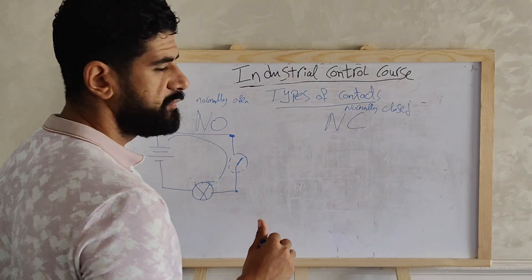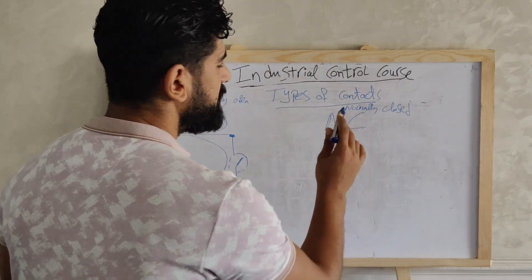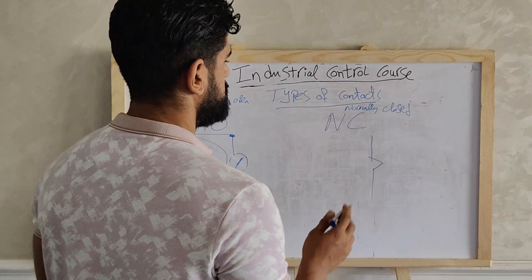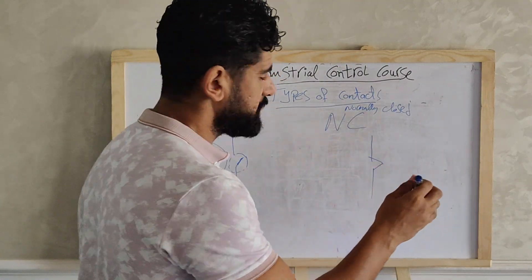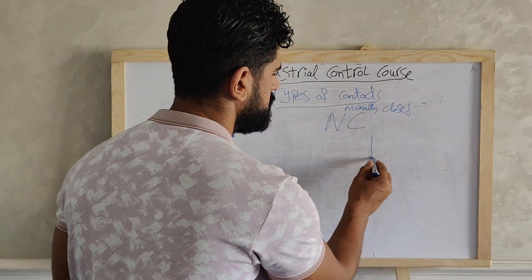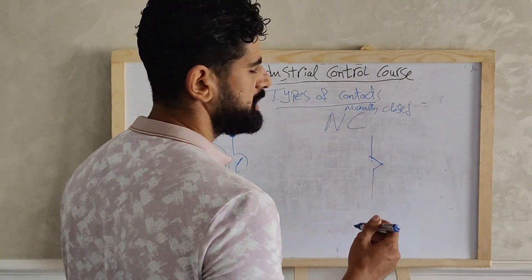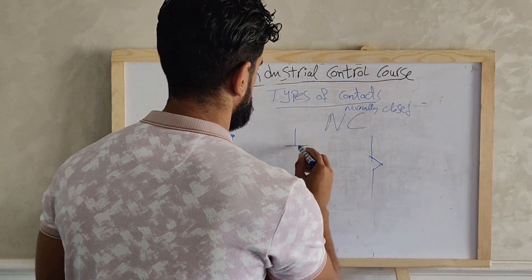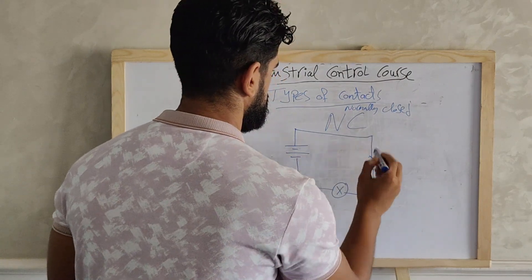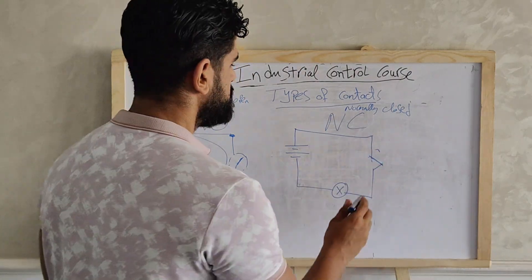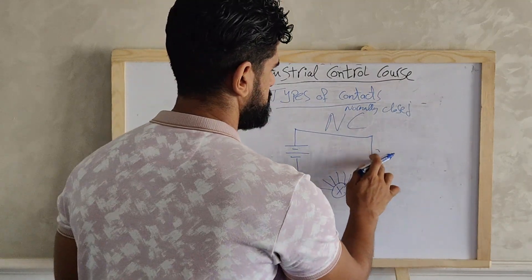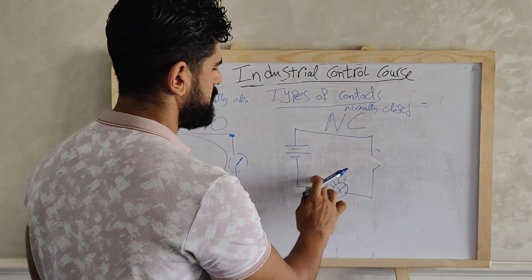A normally closed contact is closed in its primary status, which means that when we apply an action it will open, and when we stop the action it will return back to being closed. For example, with a lamp connected, the lamp will be illuminated by default. When we apply an action the contact opens, breaking the circuit, and the lamp stops illuminating.